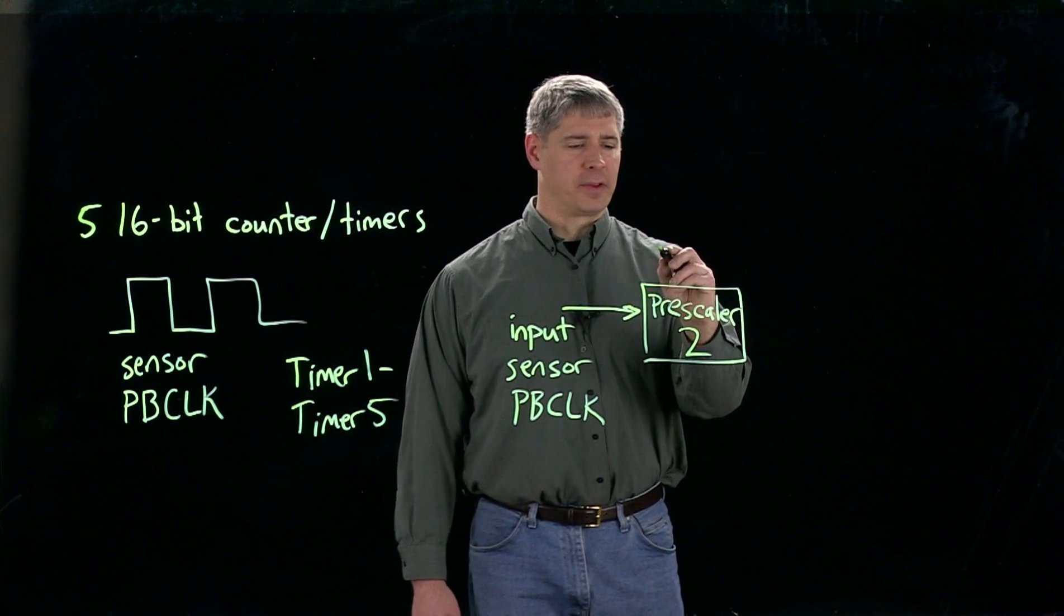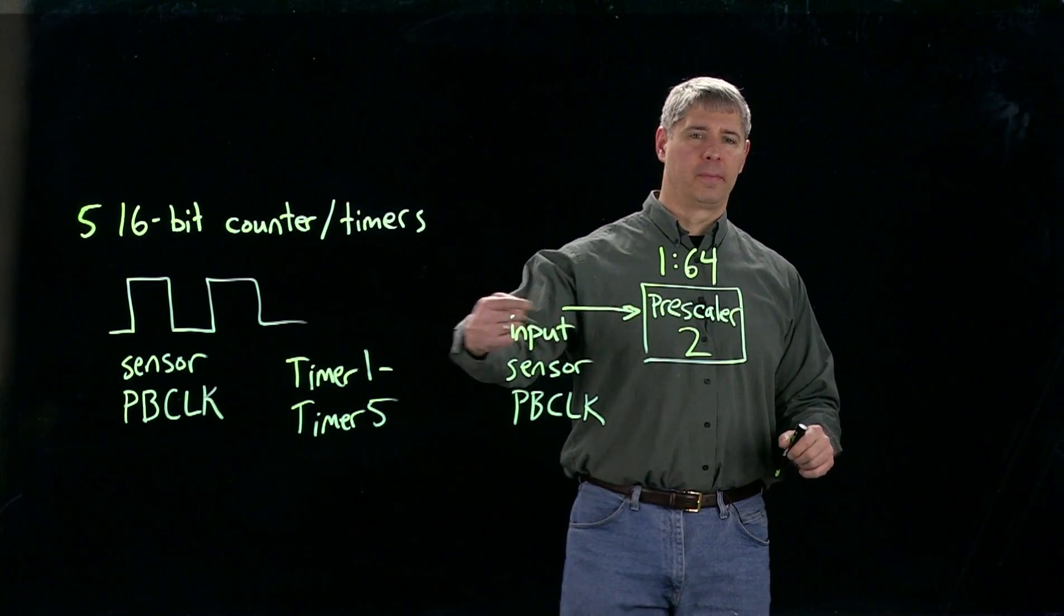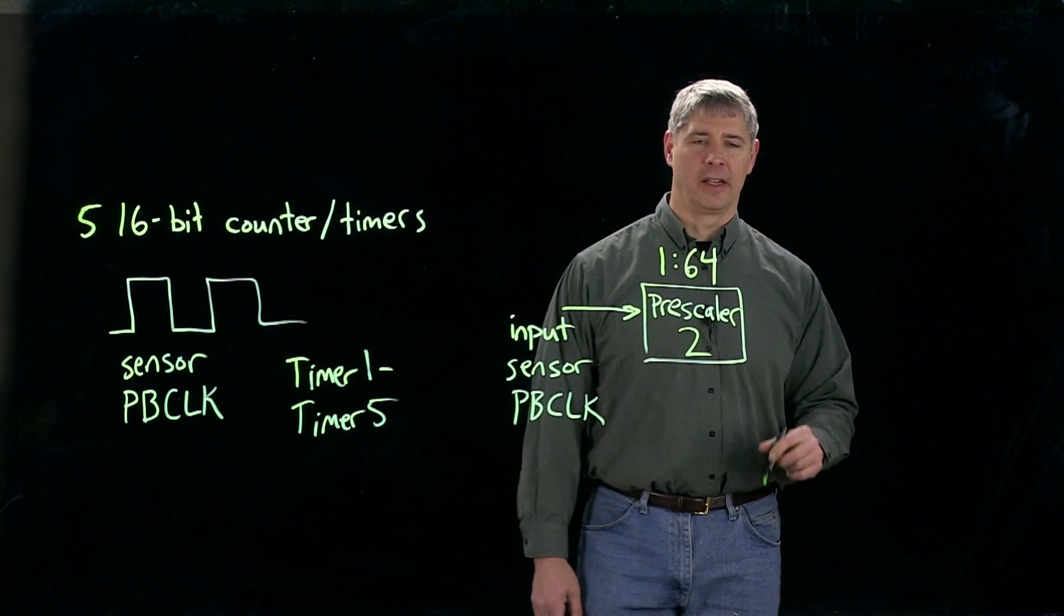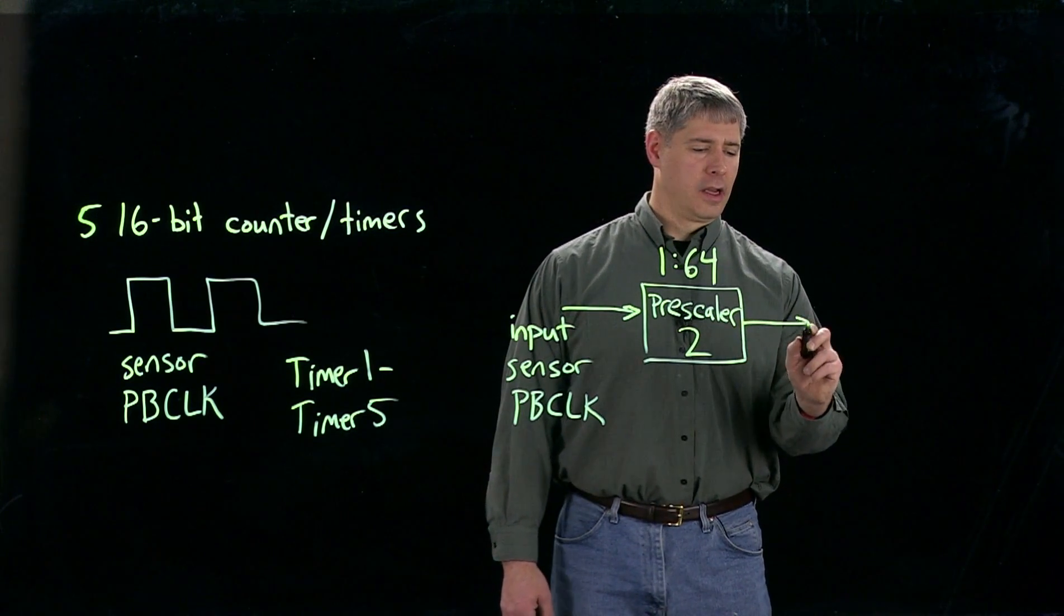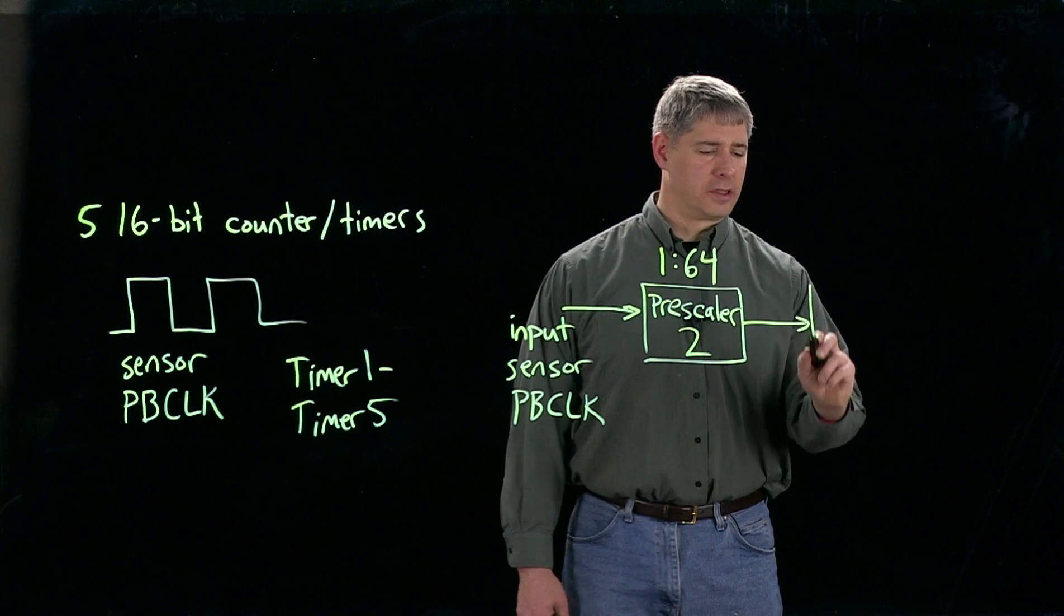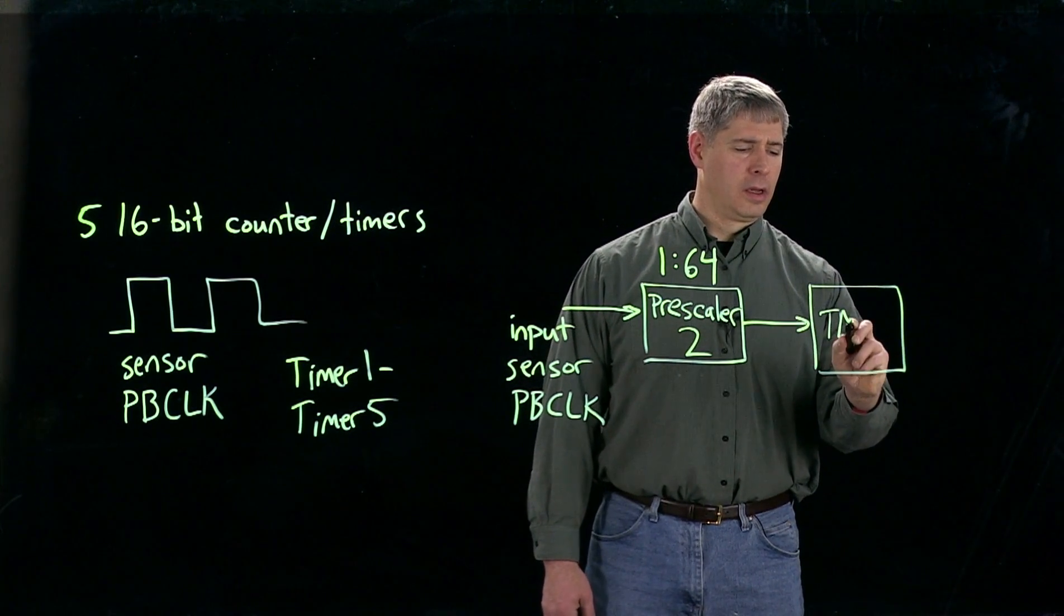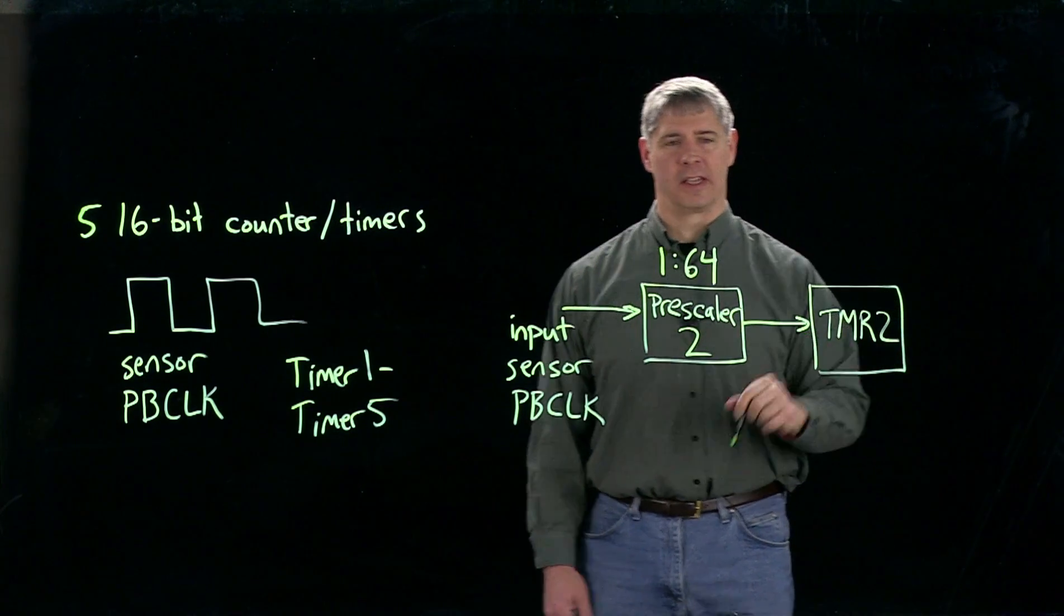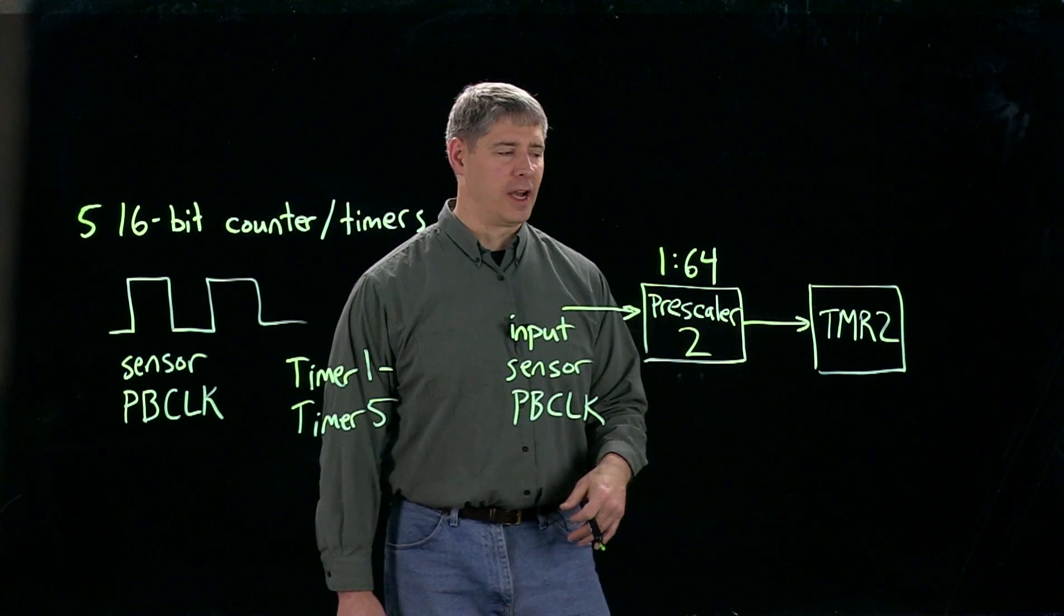So as an example, this could be a 1 to 64 prescaler. So every 64 rising edges coming in, it only creates one pulse or rising edge going out. And then that output goes into timer 2, which I'll write as TMR2, because this is the name of the special function register that holds the value of timer 2.